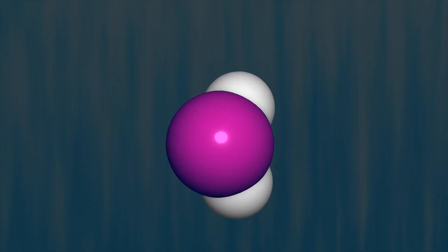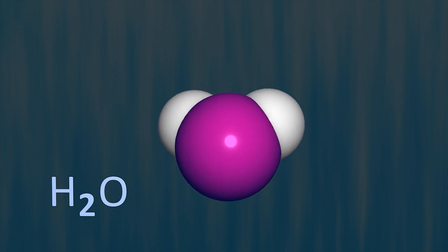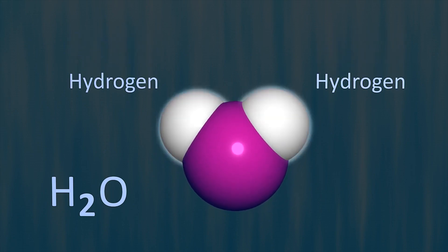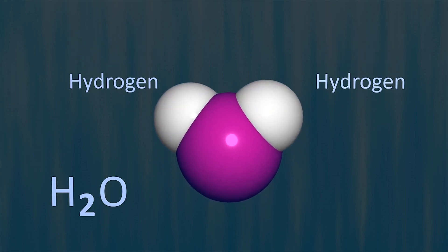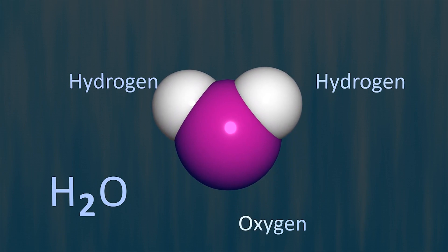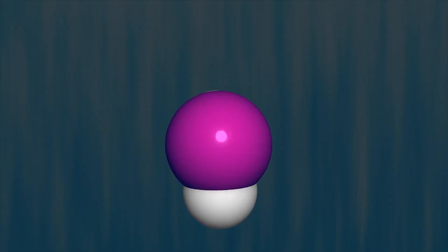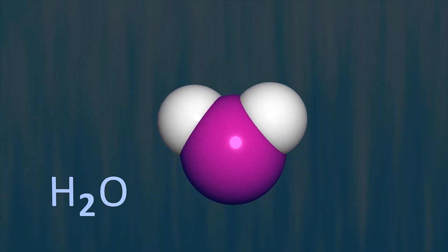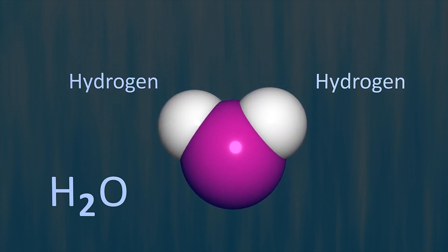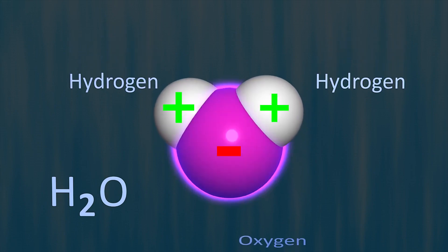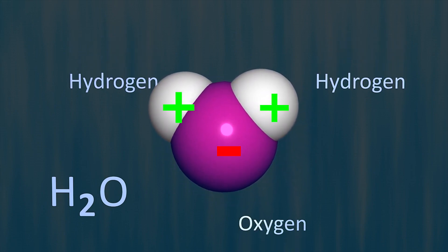You probably know water's chemical description is H2O. This basically means that it has one atom of oxygen bound to two atoms of hydrogen, which looks like the famous Mickey Mouse symbol. The hydrogen atoms are attached to one side of the oxygen atom, resulting in a water molecule having a positive charge on the side where the hydrogen atoms are, and a negative charge on the other side where the oxygen atom is.